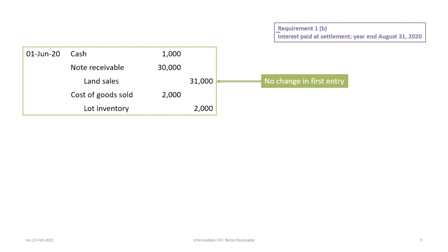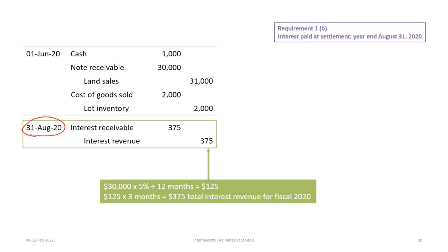Now we move to requirement 1B, where the interest is paid at settlement and the year-end is August 31st. For the first journal entry there is no change: still on June 1st, cash received is $1,000 down, land sales $31,000, and the note of $30,000, along with cost of goods and lot inventory. But now there is an intervening year-end, so since the interest is paid at settlement, there are no regular monthly interest payments — it is all paid at the end — but we do have to accrue interest at August 31st.